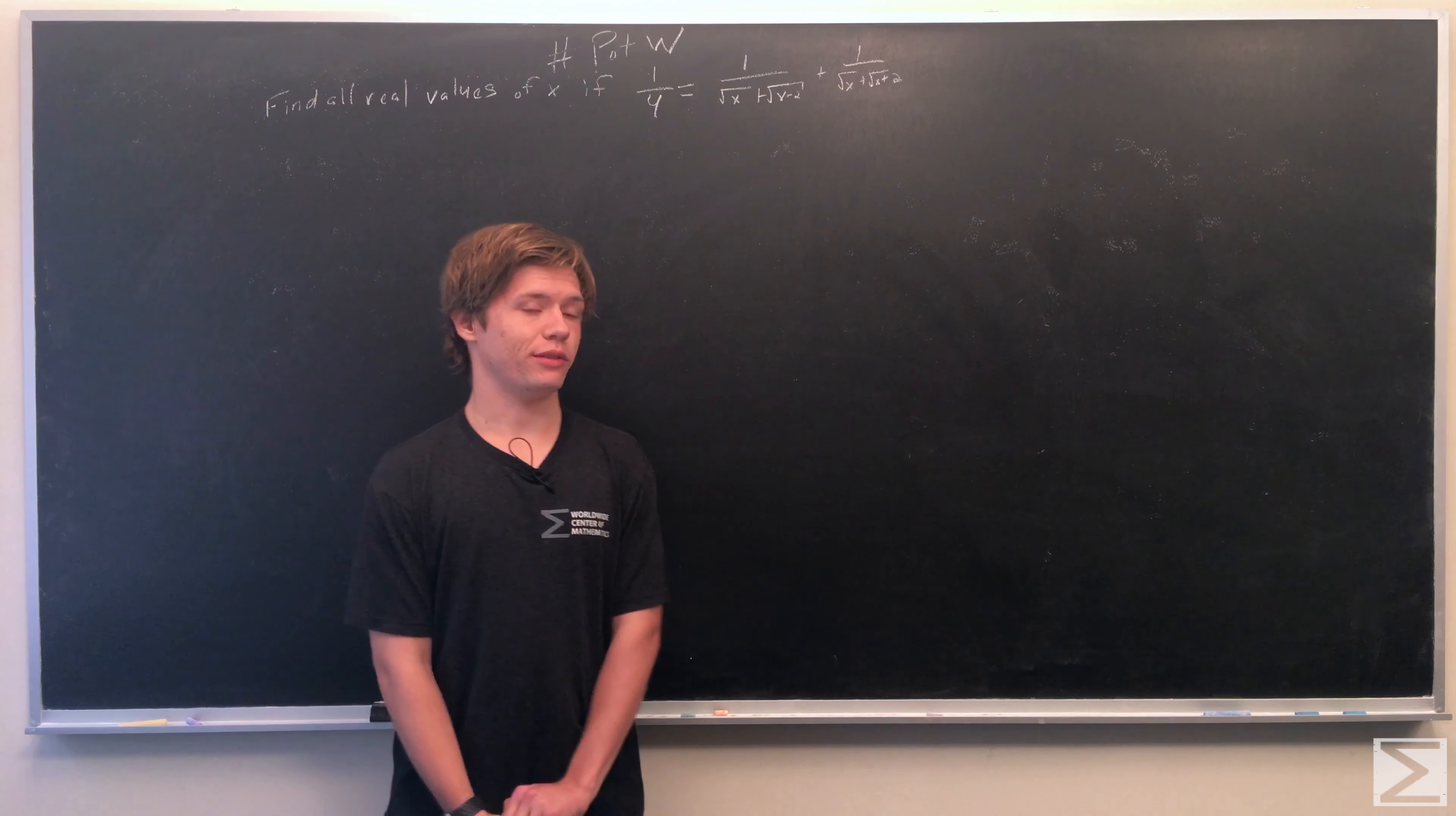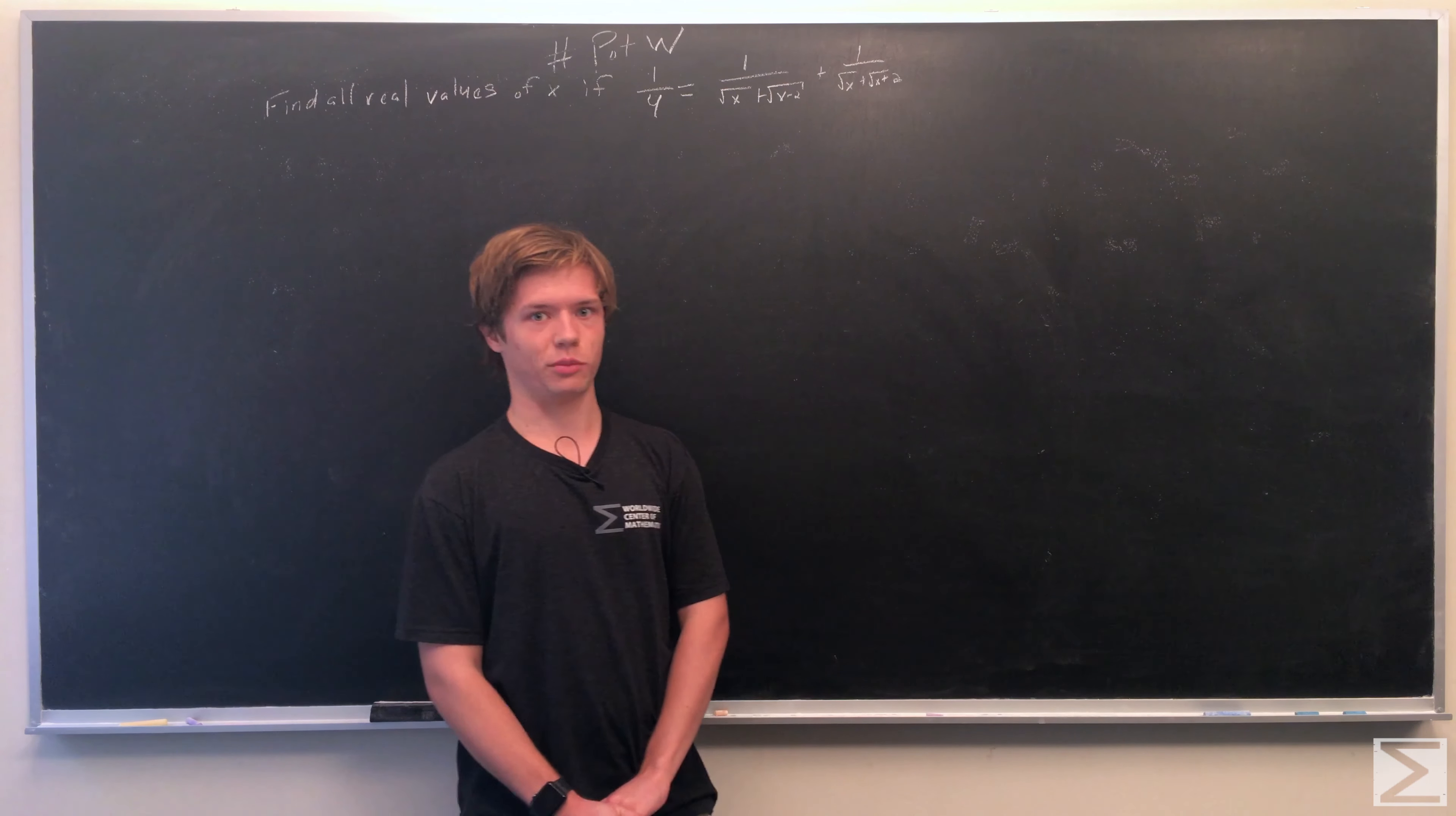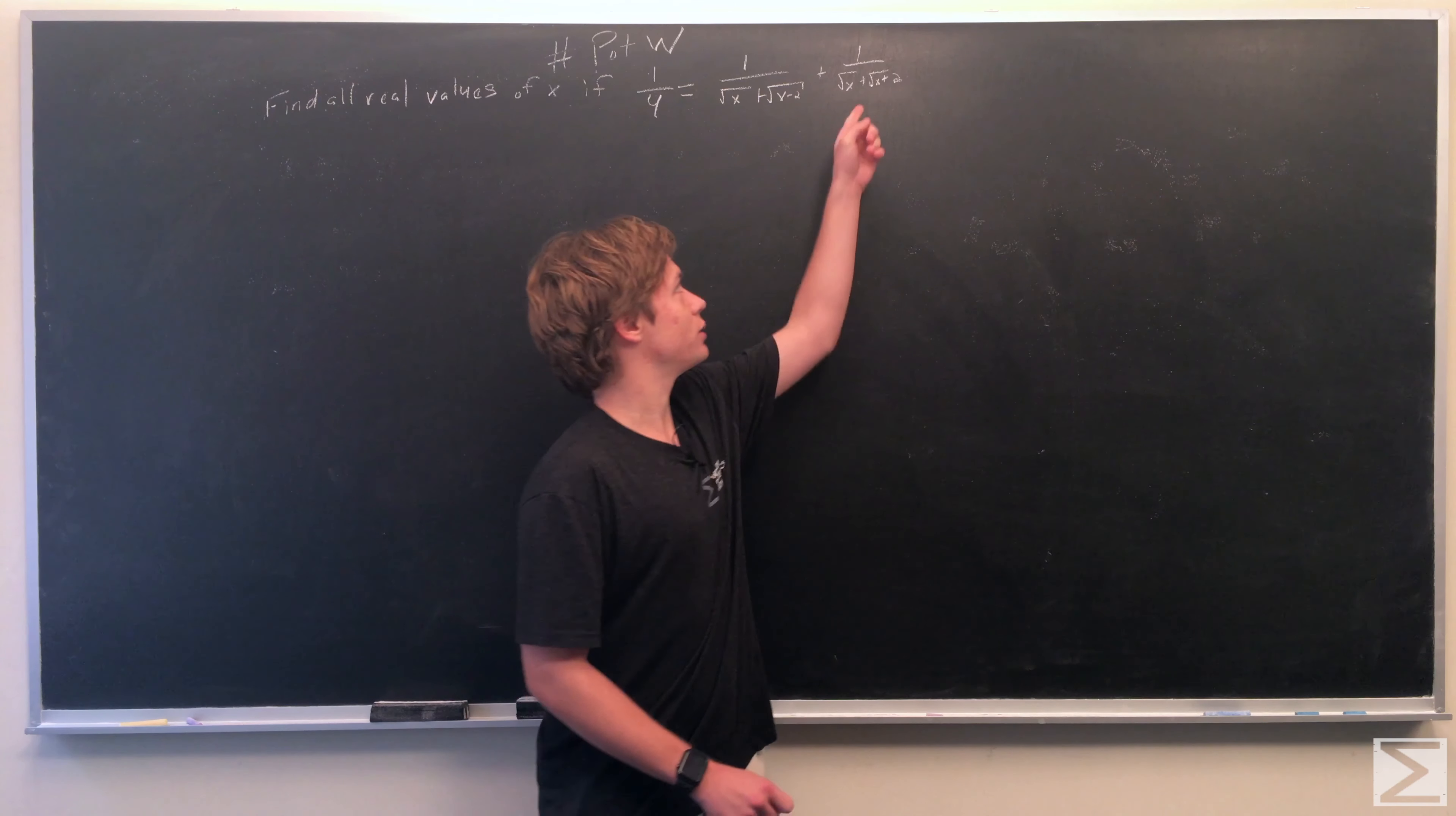The first thing we have to do is simplify the denominators. Because these are in the form a plus b, we'll multiply them by the a minus b forms. For the term 1 over (√x + √(x-2)), we'll multiply by (√x - √(x-2)).